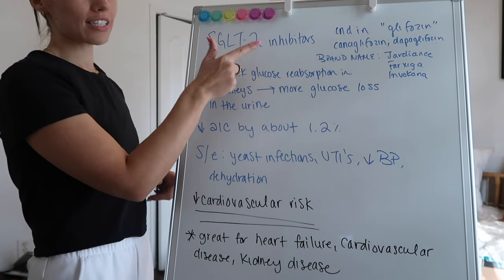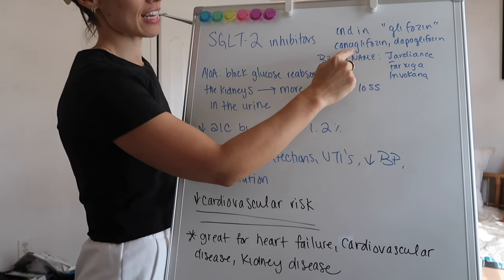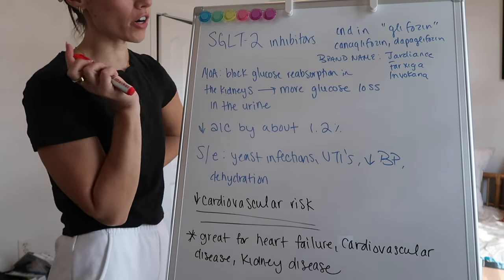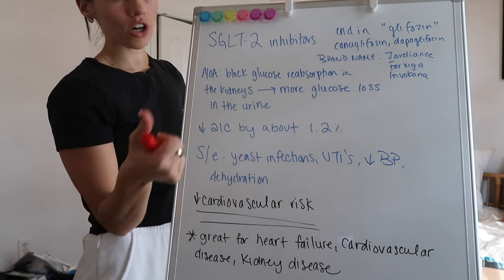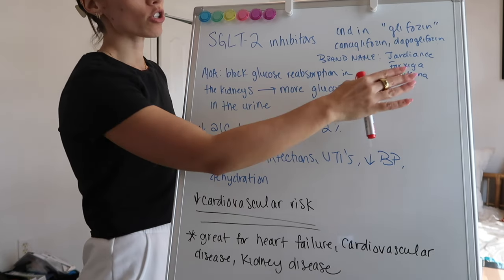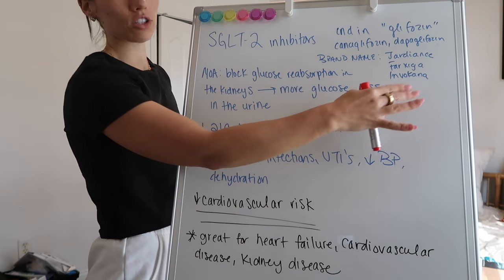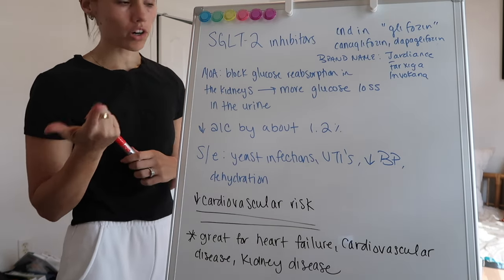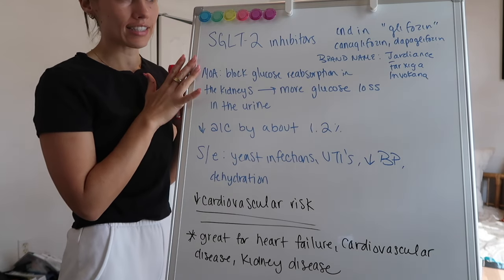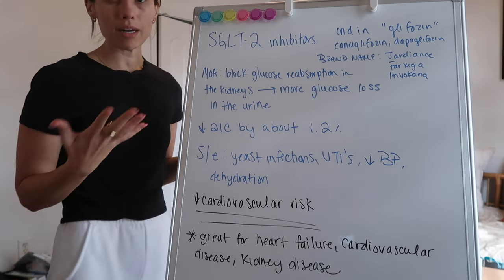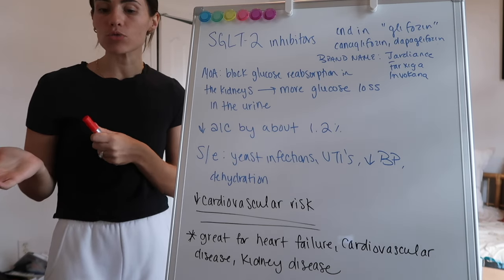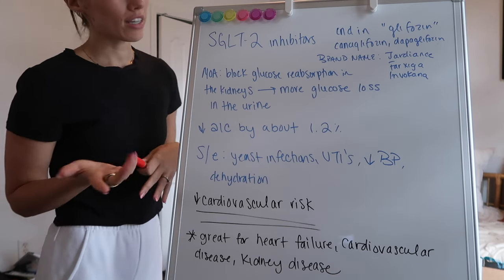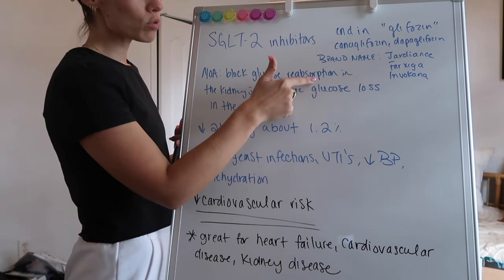Our next drug class is going to be your SGLT-2 inhibitors, and they are anything that ends in '-gliflozin.' So Canagliflozin, Dapagliflozin — but your brand names that you'll probably recognize are Jardiance, Farxiga, and Invokana. These are prescribed a ton by cardiologists and nephrologists, because what I want you guys to remember most about these is they are really good for the kidneys and for the heart. You will not always see these in a diabetic patient — you could see them in a patient who has cardiovascular disease or renal disease who does not have diabetes, because they are really good for the heart and for the kidneys.